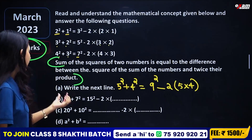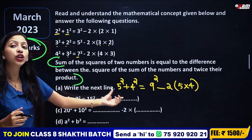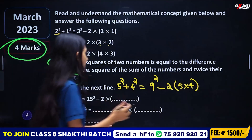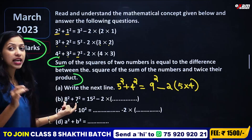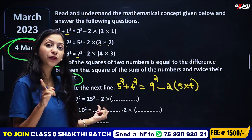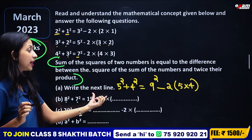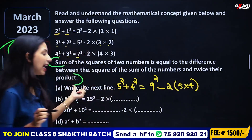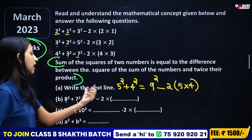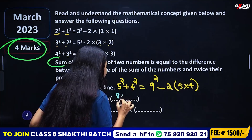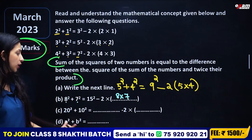8 squared plus 7 squared is equal to 15 squared minus 2 into what? The sum of 8 and 7 is 15. So 8 squared plus 7 squared is equal to 15 squared minus 2 into 8 into 7.